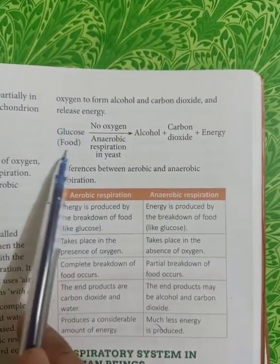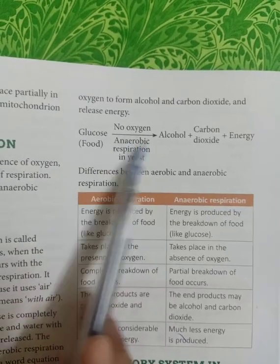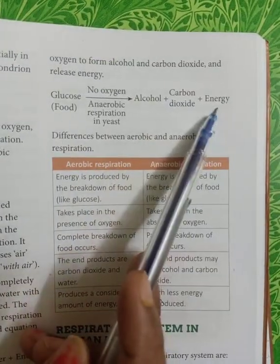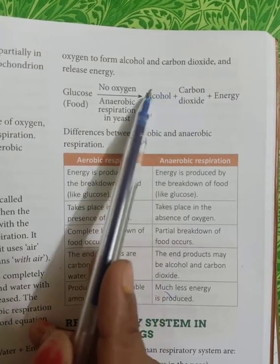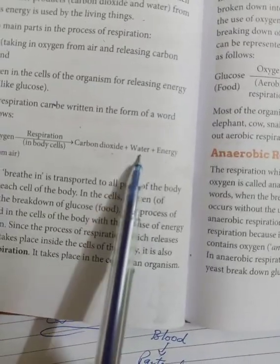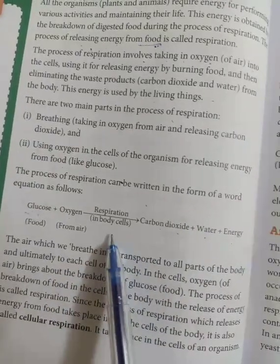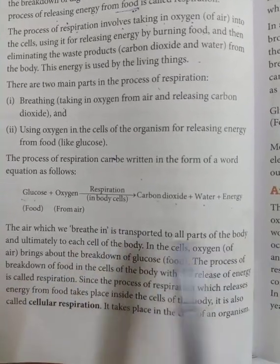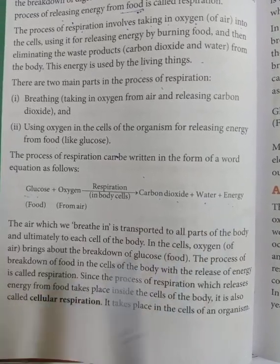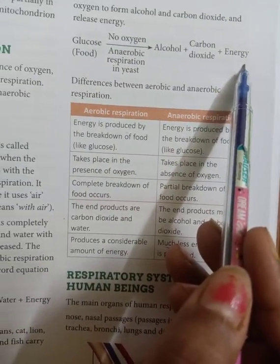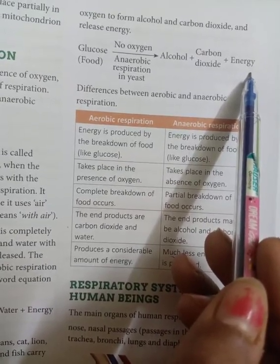In anaerobic respiration, only food is present but no oxygen. Without oxygen, the end product is not just carbon dioxide — it will also produce alcohol and water. So two differences: aerobic respiration contains oxygen; anaerobic respiration is without oxygen. Aerobic respiration end products are carbon dioxide, water and energy. Anaerobic respiration end products are alcohol, carbon dioxide and energy. These are two very important processes occurring in our body.